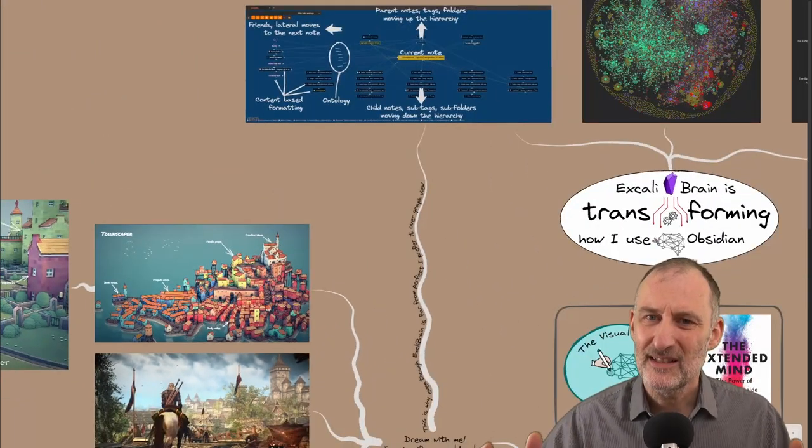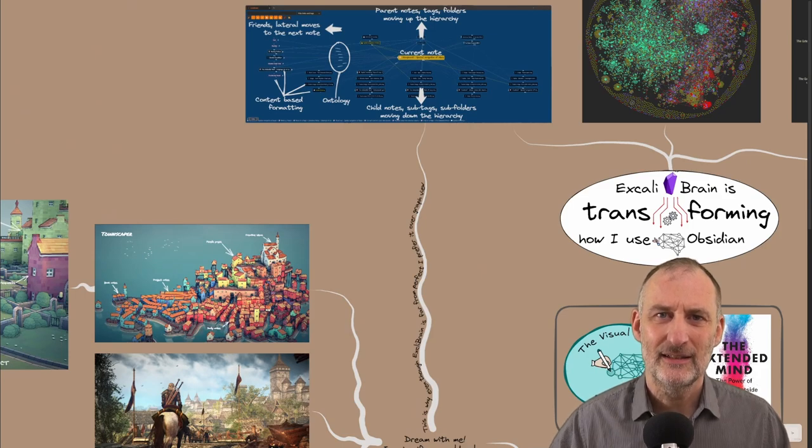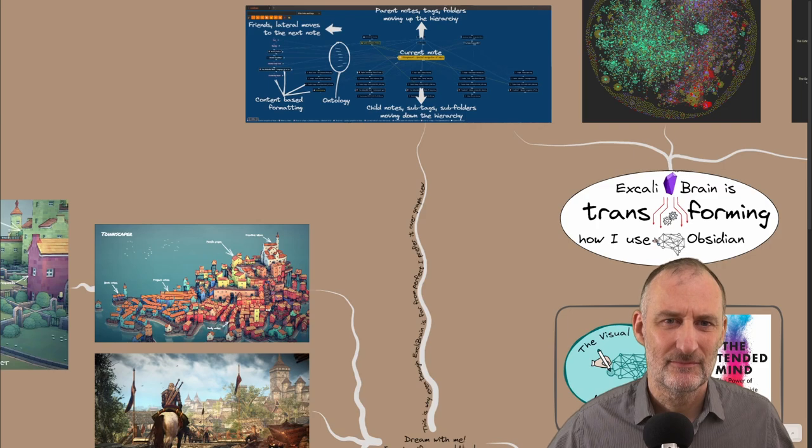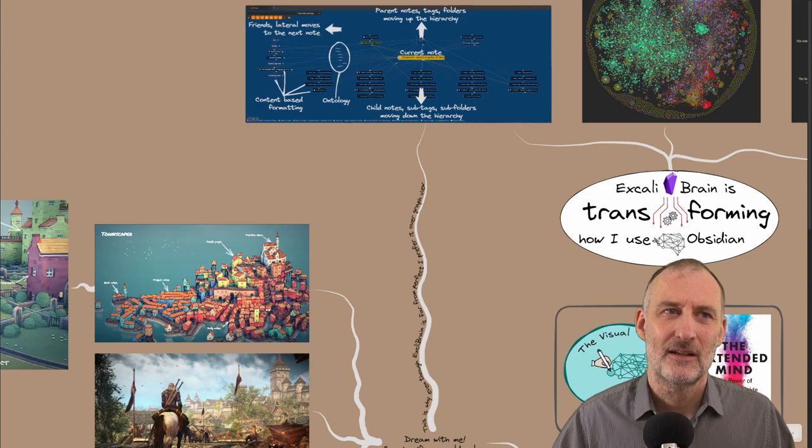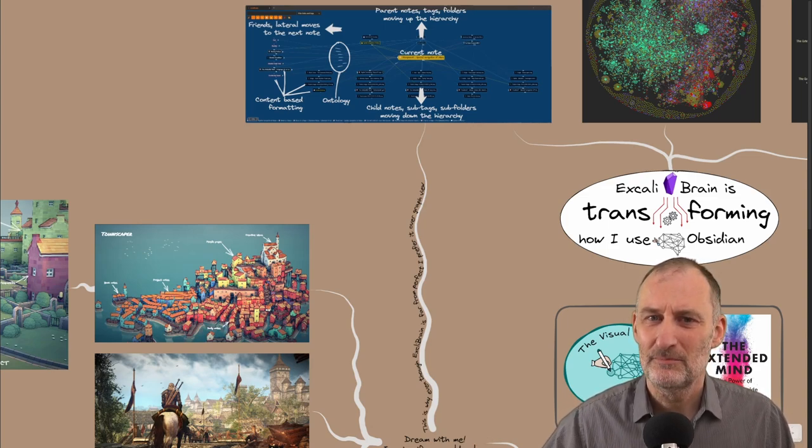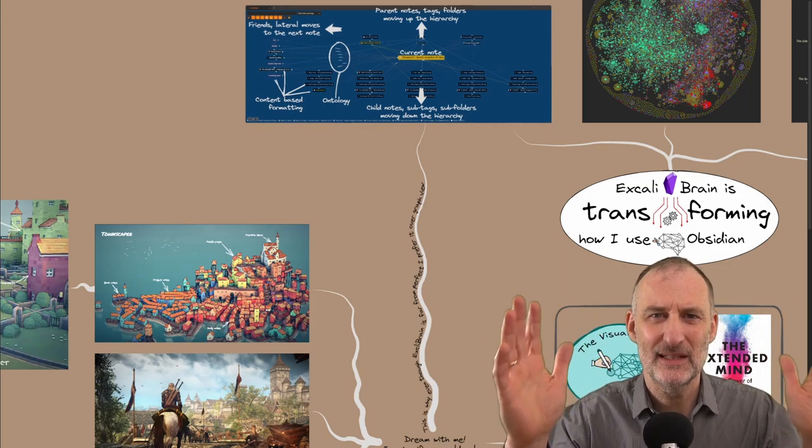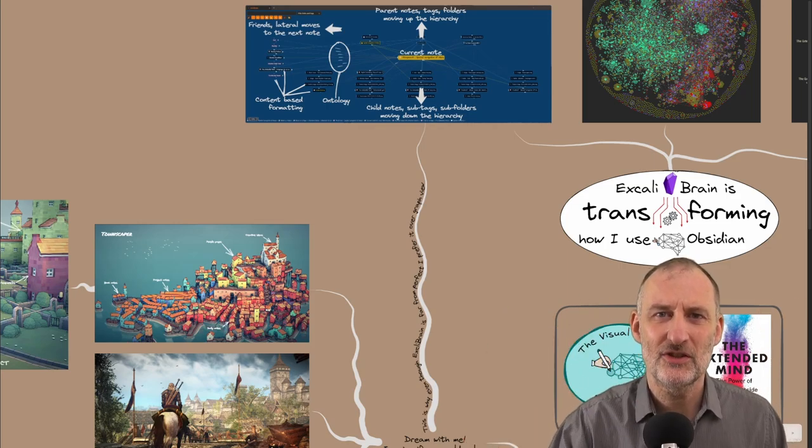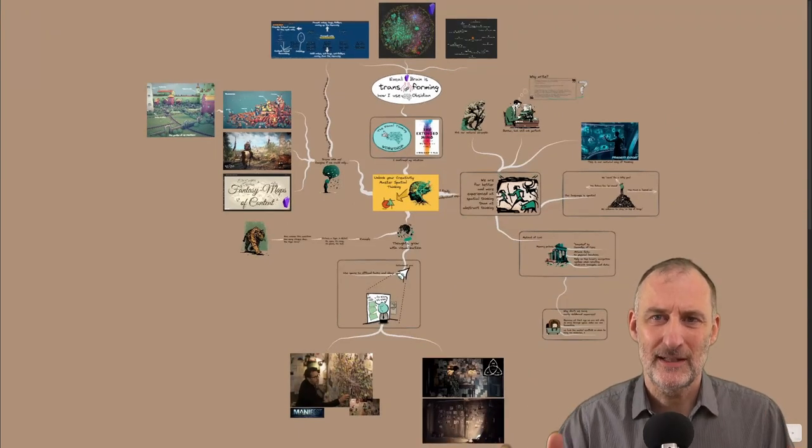So in summary, I think this is why I find Excalibrain, even though it's very far from perfect, it is sort of a minimum viable product, a proof of concept that I created. But ever since I've created it, this has transformed the way I use Obsidian. It has given me this spatial orientation in my vault and I find it transformational. And finally, now I understand why.